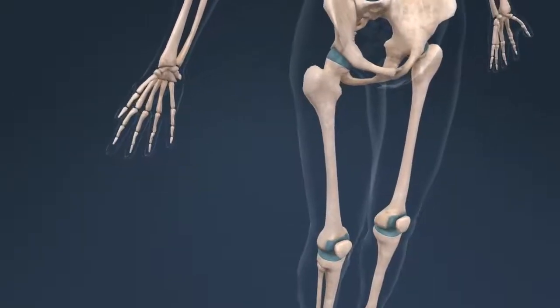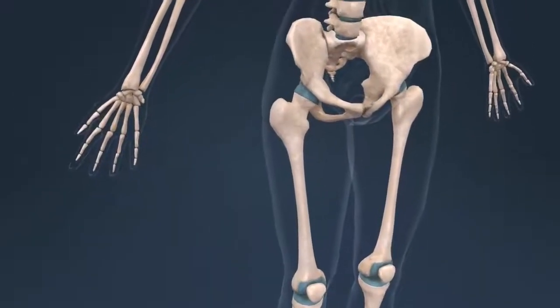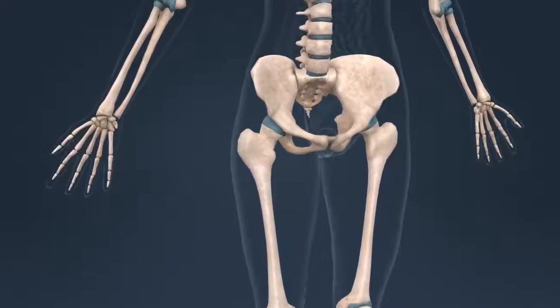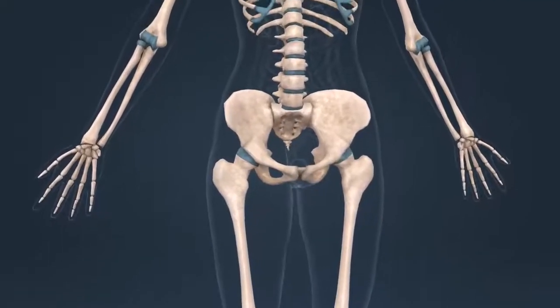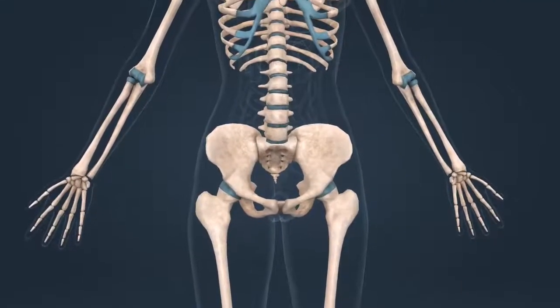The skeleton of an adult human consists of 206 bones. Bones are rigid and flexible at the same time in order to carry a large amount of weight.